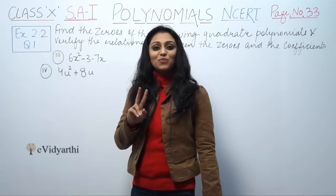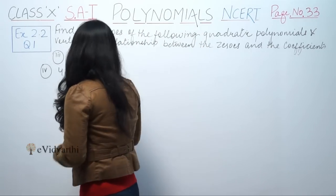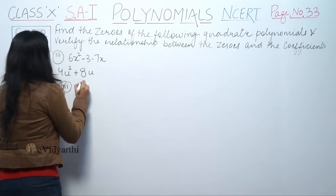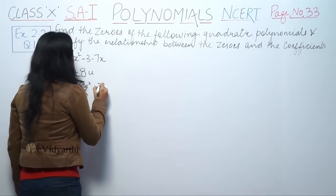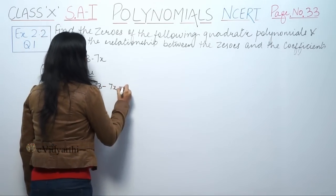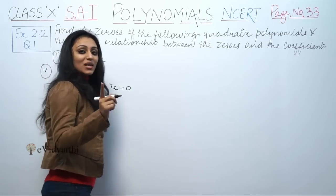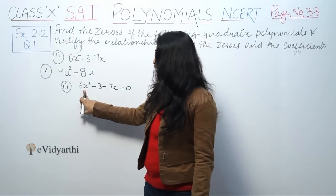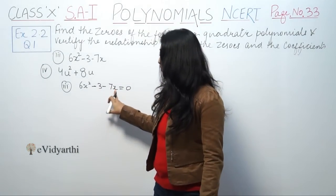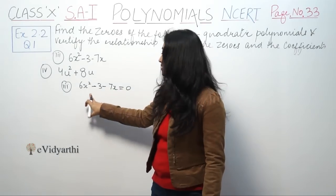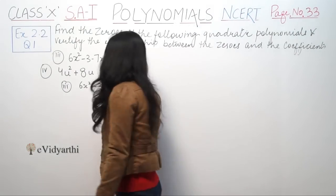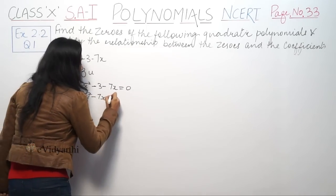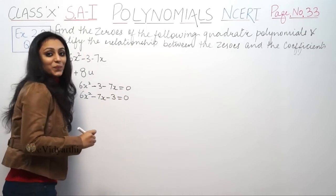This is part number 3. The polynomial given is 6x squared minus 3 minus 7x equals 0. In a quadratic equation, the first term is the squared term, then the single variable term, then the constant. So first we arrange it: 6x squared minus 7x minus 3 is equal to 0.